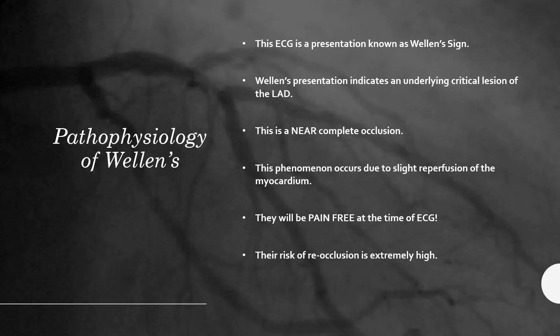That ECG is representative of Type A Wellens — that's the up and then down, or biphasic T wave. What's happening here is this is a near complete occlusion of the LAD. Something causes the LAD to become occluded, and then something shifts and we get a little bit of blood flow back to the affected part of the myocardium, which typically causes a resolution of the chest pain or at least a significant reduction in symptoms.